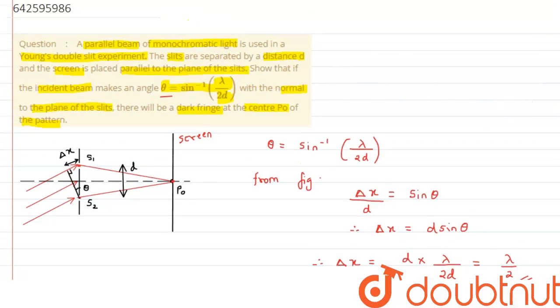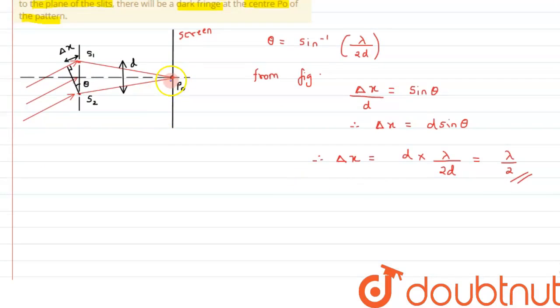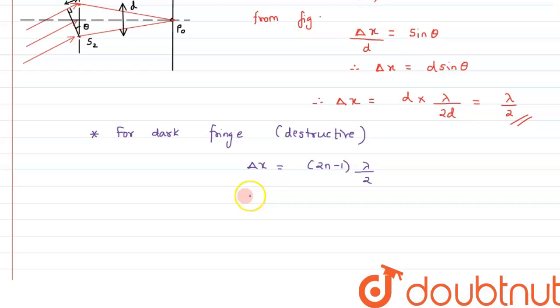We have already studied that to get a bright fringe the path difference should be integral multiple of lambda, and for dark fringe or destructive interference, the path difference should be odd multiple of lambda by 2. So from this, to get the at center we can say: